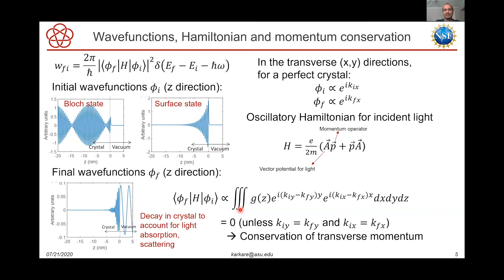The Hamiltonian for incident light is given by p·A, where p is the momentum operator and A is the vector potential for light, which also has an oscillatory component. When you calculate the overlap integral of all these wave functions over all space, the transverse components are proportional to e^(i(k_ix - k_fx)). Integrating over all x or y gives zero unless the initial and final transverse momenta are identical. This leads to the rule of conservation of transverse momentum during photo emission, which is the key principle on which all of photo emission spectroscopy is based and something we exploit for obtaining low MTE.